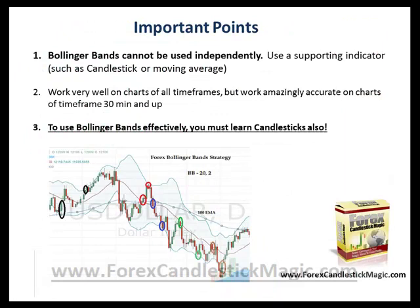Now let me cover some important points. As I mentioned earlier, Bollinger Bands cannot be used independently — you should use a supporting indicator such as a candlestick or a moving average, like the 100 exponential moving average used in the strategy I just showed you. It works well on all timeframes, but the accuracy is very high on timeframes of 30 minutes and above — like the 30-minute chart, one-hour chart, four-hour chart, and daily chart — because there is less noise. To use Bollinger Bands effectively, you must also learn candlesticks.